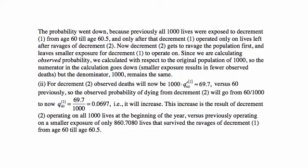The probability went down because previously all 1000 lives were exposed to decrement 1 from age 60 to 60.5, and only after that did decrement 1 operate on those remaining after decrement 2. But now decrement 2 ravages the population first at age 60, leaving a smaller exposed population for decrement 1. Since observed probabilities are calculated relative to the initial population of 1000, fewer observed deaths in the numerator means a lower probability.